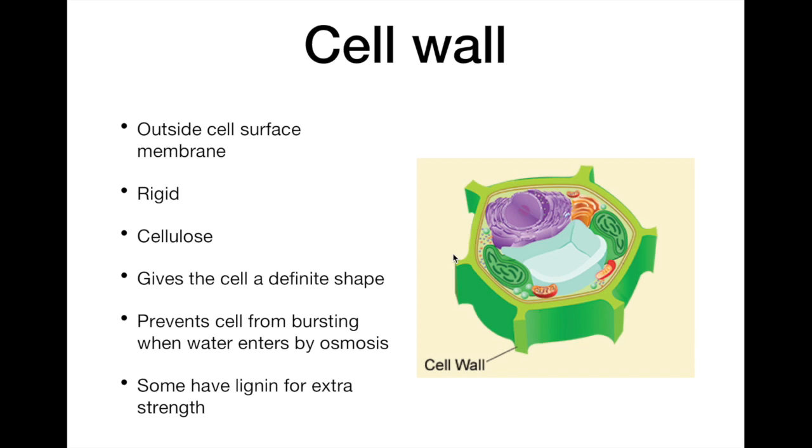This cell wall is a relatively rigid structure because it contains fibers of cellulose, a polysaccharide which strengthens the wall. The cell wall gives the cell a definite shape. It prevents the cell from bursting when water enters by osmosis, allowing large pressures to develop inside the cell. Cell walls may also be reinforced with extra cellulose or with a hard material called lignin for extra strength.